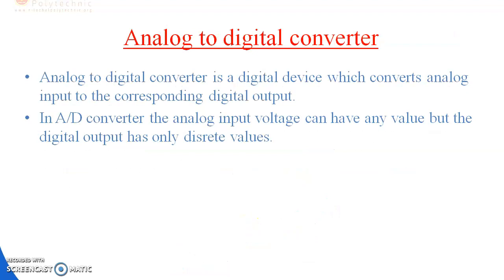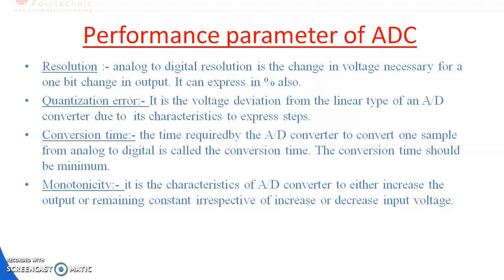Next is the analog-to-digital converter. An analog-to-digital converter is a digital device which converts an analog input to the corresponding digital output. In an ADC, the analog input voltage can have any value, but the digital output has only one digital value. The performance parameters of ADC are: resolution, quantization error, conversion time, and monotonicity.